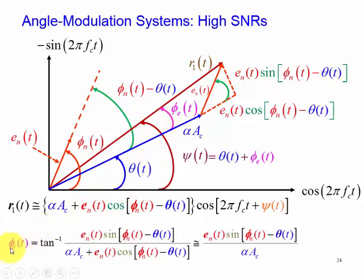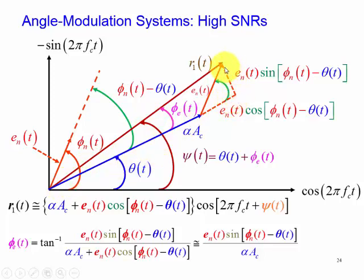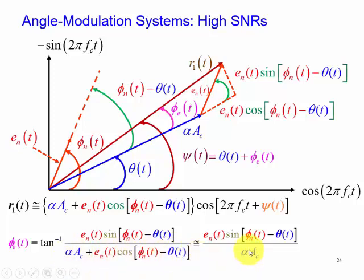The error angle phi_e(t) is the opposite side divided by the adjacent side — not the hypotenuse. The opposite side is e_n(t) sine(phi_n minus theta(t)), and the adjacent side consists of alpha_ac plus the component e_n(t) cosine(phi_n minus theta(t)). Since alpha_ac is much larger than the noise, we can approximate the denominator as simply alpha_ac.